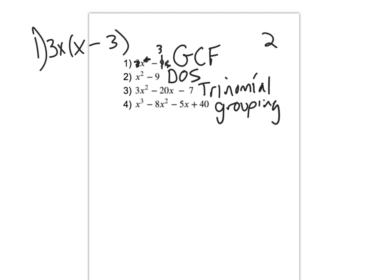Number 2, we have difference of squares. Square root, we end up with x and x. If I square root of x squared, the square root of 9 is 3 and 3. And then I have one of each sign.